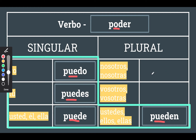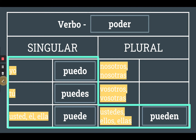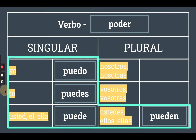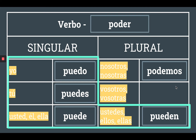Now what about the two forms left outside of the boot — nosotros and vosotros? Those are not going to have a stem change. So we're actually going to retain P-O-D, pod. Nosotros is going to be podemos, and vosotros is going to be podéis.